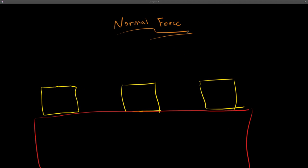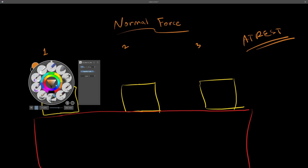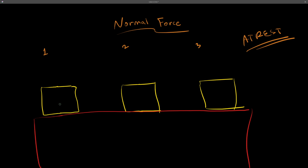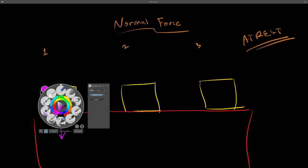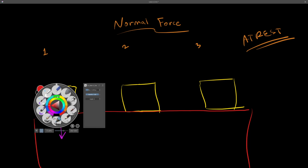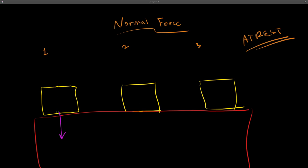The final topic is normal force, and there are three cases. It's important to note that in all cases the objects are at rest — they are not moving. In the first case, I have a box on a table. The forces acting on the box: there's the force of gravity downwards, and there's the normal force upwards. These two forces are equal, so the object's net force is zero and it stays in place.